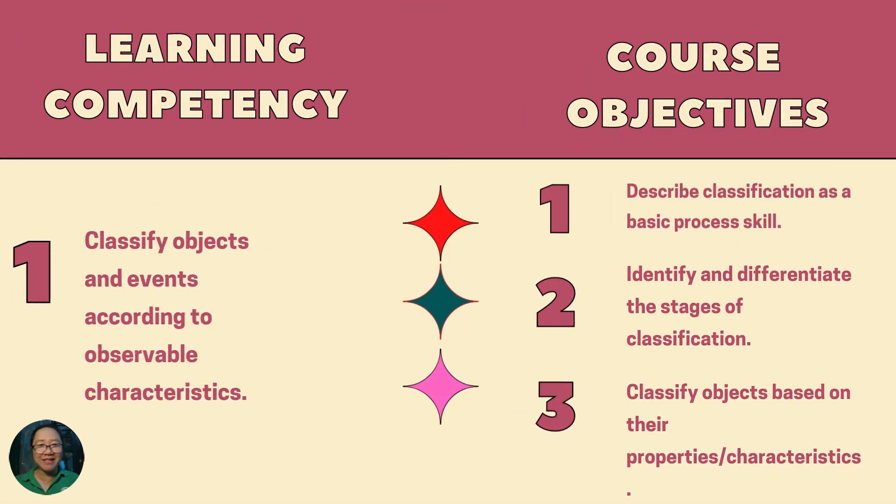Learning competency: classify objects and events according to observable characteristics. Course objectives: describe classification as a basic process skill, identify and differentiate the stages of classification, and classify objects based on their properties or characteristics.